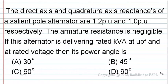The direct axis and quadrature axis reactances of a salient pole alternator are 1.2 per unit and 1.0 per unit respectively. The armature resistance is negligible. If this alternator is delivering rated kVA at unity power factor and rated voltage, then its power angle is: